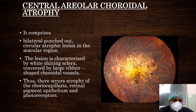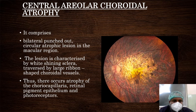The lesion of central areolar choroidal atrophy is characterized by wide, shiny sclera traversed by large ribbon-shaped choroidal vessels. There occurs atrophy of the choriocapillaris, retinal pigment epithelium, and photoreceptors. This gives a clue to the diagnosis of central areolar choroidal atrophy.